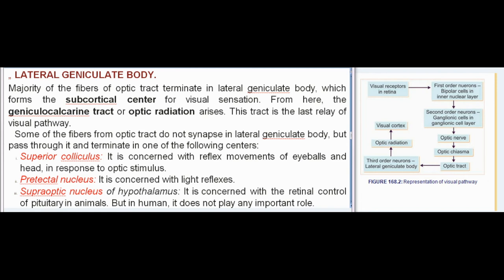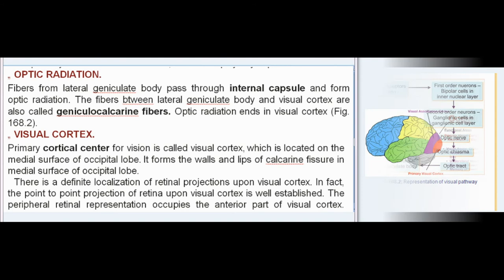Lateral geniculate body: The majority of fibers of the optic tract terminate in the lateral geniculate body, which forms the subcortical center for visual sensation. From here, the geniculocalcarine tract or optic radiation arises, which is the last relay of the visual pathway. Some fibers do not synapse here but pass through to terminate in: the superior colliculus (concerned with reflex movements of eyeballs and head), the pre-tectal nucleus (concerned with light reflexes), and the supraoptic nucleus of the hypothalamus (concerned with retinal control of pituitary in animals, but not significant in humans).